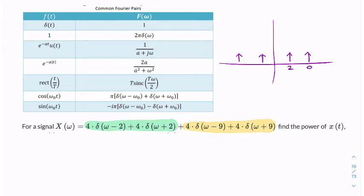So two, nine, minus two, minus nine. So this is the spectrum that we're looking at.